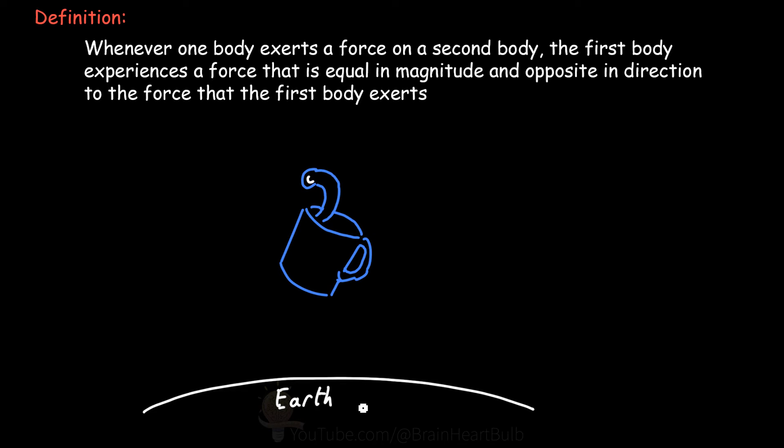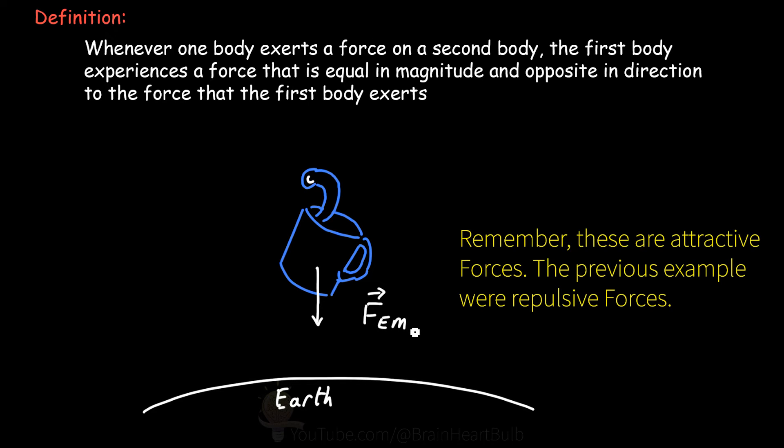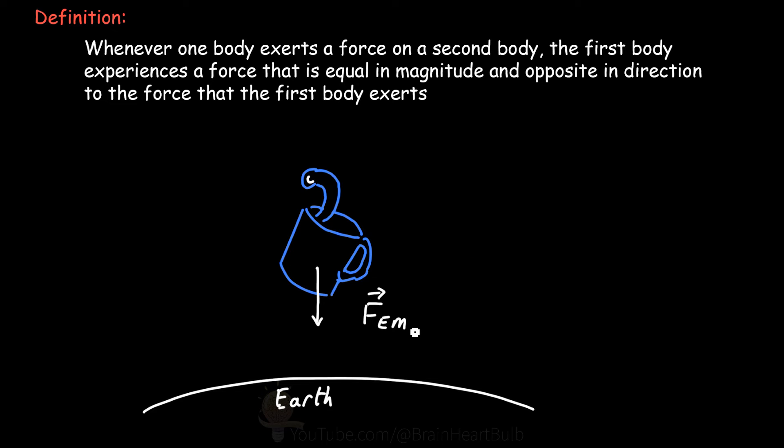But we still have two equal forces that act in opposite directions. We have the attractive force of the Earth - in other words, the gravitational force of the Earth acting on the mug. But again, according to Newton's third law, we must also have an equal and opposite force coming from a second object. In our case, that is the gravitational force the mug exerts on the Earth.